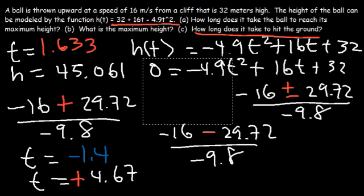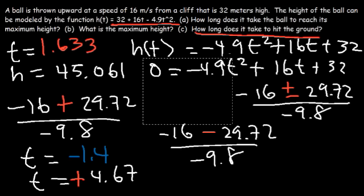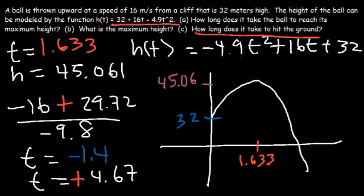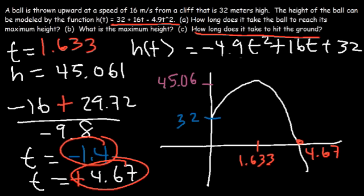Interpreting the results: the ball starts at height 32 meters, reaches maximum height 45.06 meters at t equals 1.633 seconds, and hits the ground at t equals 4.67 seconds. The other solution from the quadratic formula gives a negative time value — about negative 1.4 — which represents extending the graph backward and has no meaning in a real-life context. So the answer for part c is 4.67 seconds.